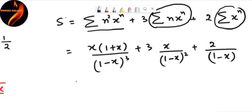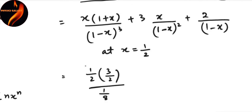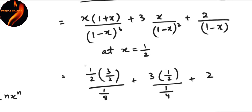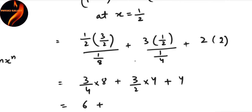Plugging in x equals 1/2: the first term becomes (1/2)(3/2) divided by (1/2)³, which is (3/4) times 8. The second term is 3 times (1/2) divided by (1/2)², giving (3/2) times 4. The third term is 2 divided by (1/2), giving 4. So S equals 6 plus 6 plus 4, which equals 16. This was one of the answer options.